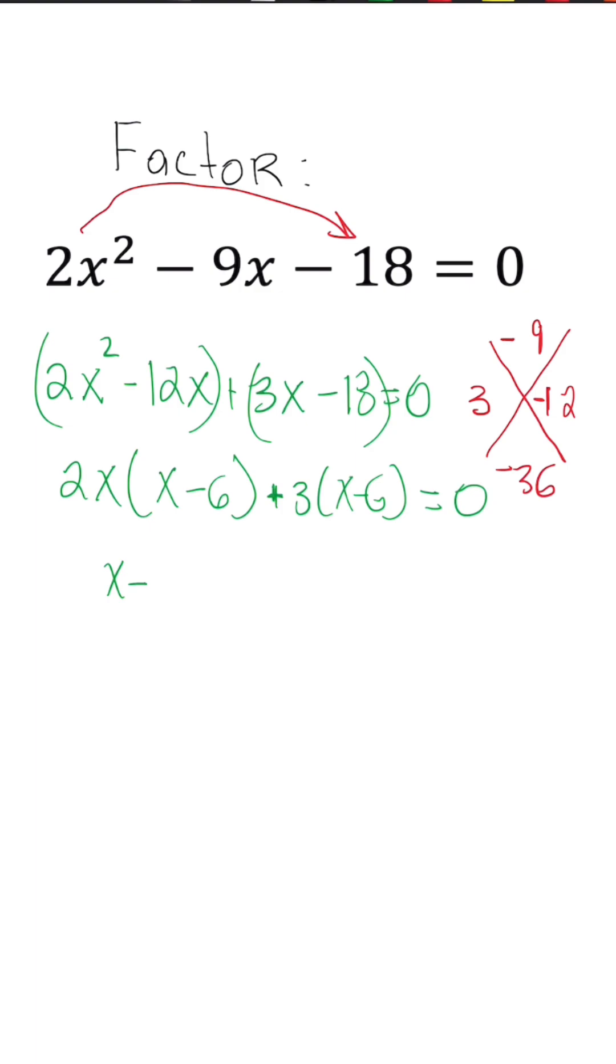So our first factor is x minus 6 is equal to 0. So we know x is equal to positive 6. And the second factor is just a combination of what is outside the parentheses. So 2x plus 3 is equal to 0. We subtract 3 to get 2x is equal to negative 3. And then after we divide, we get x is equal to negative 3 over 2.